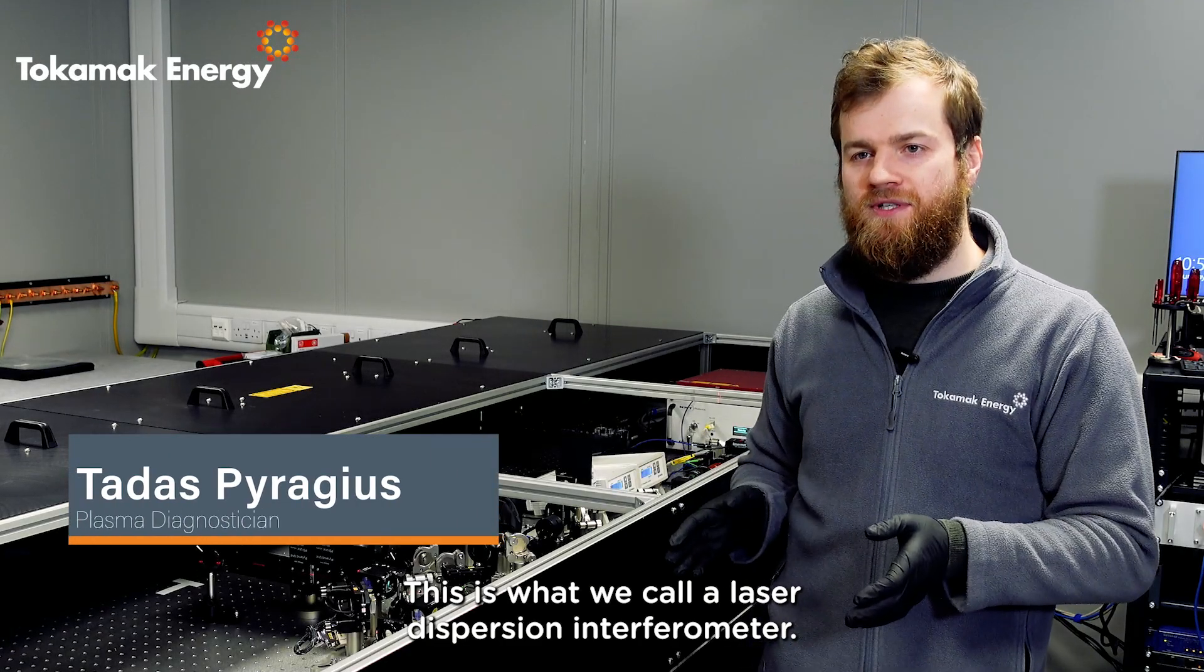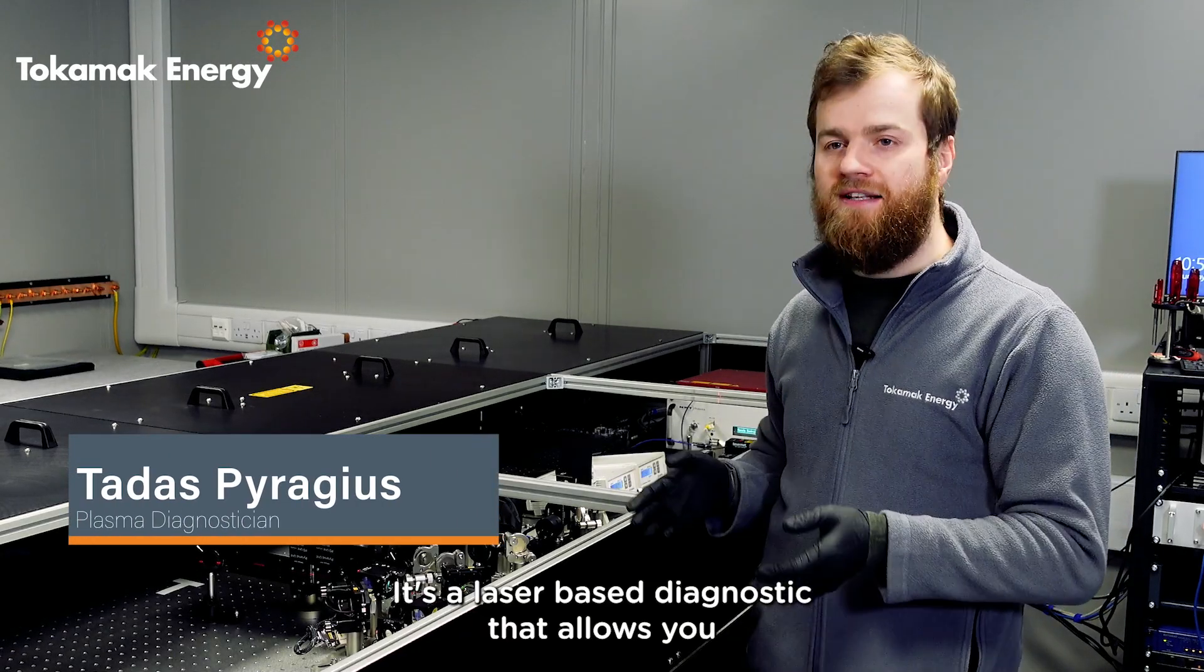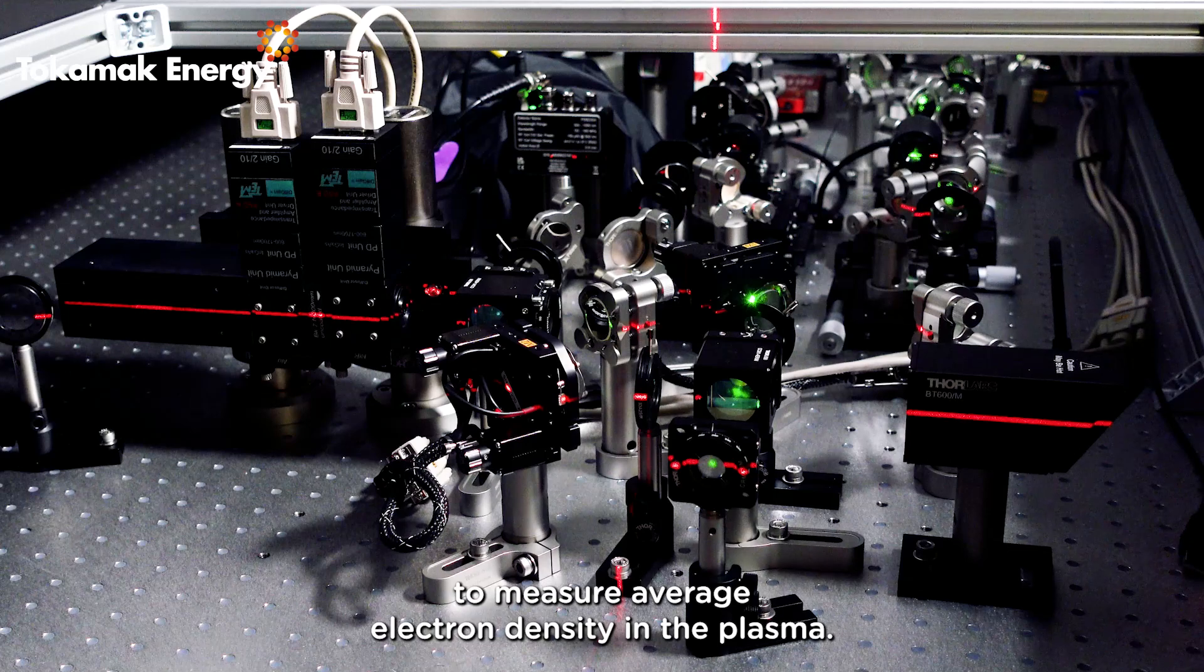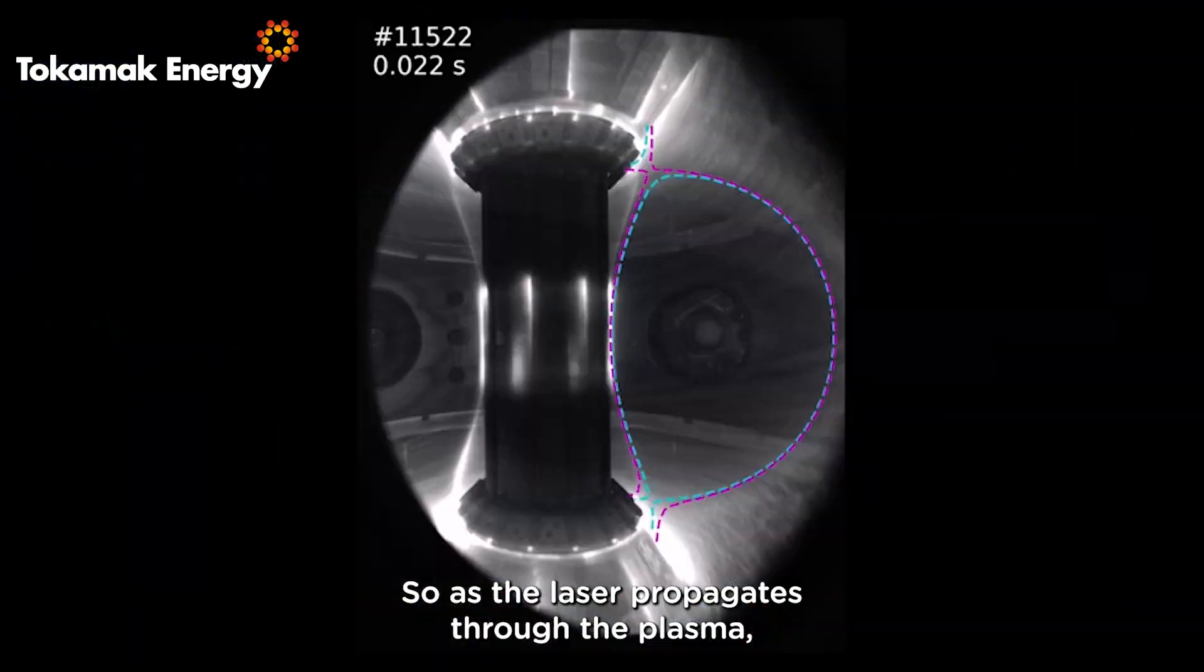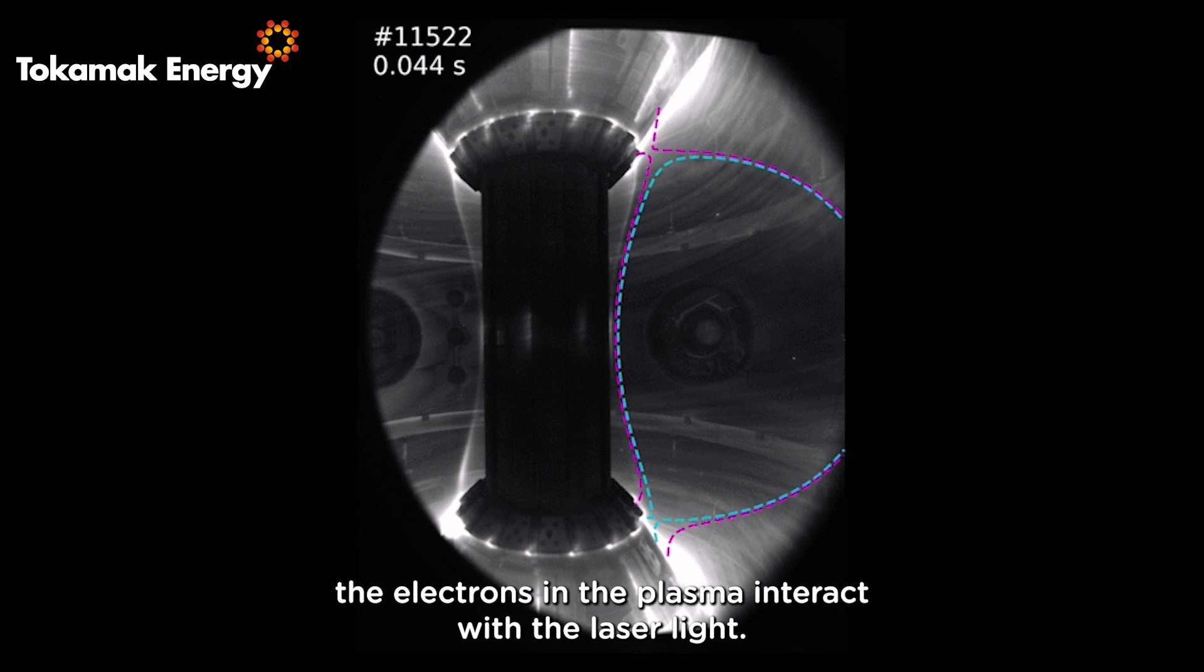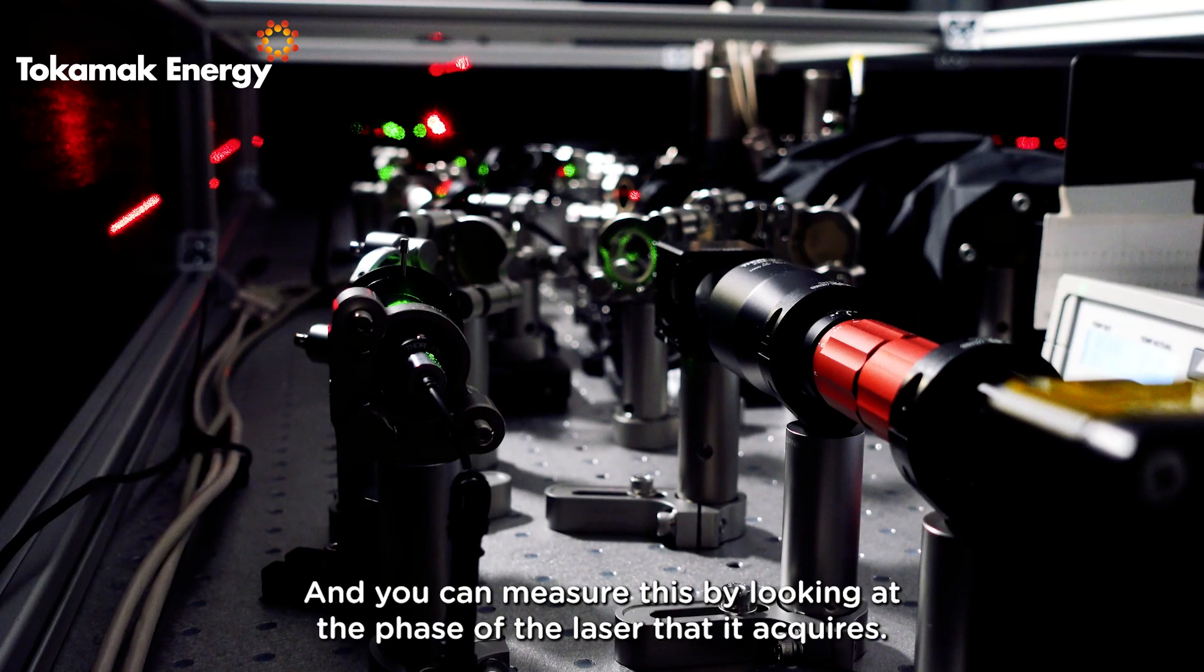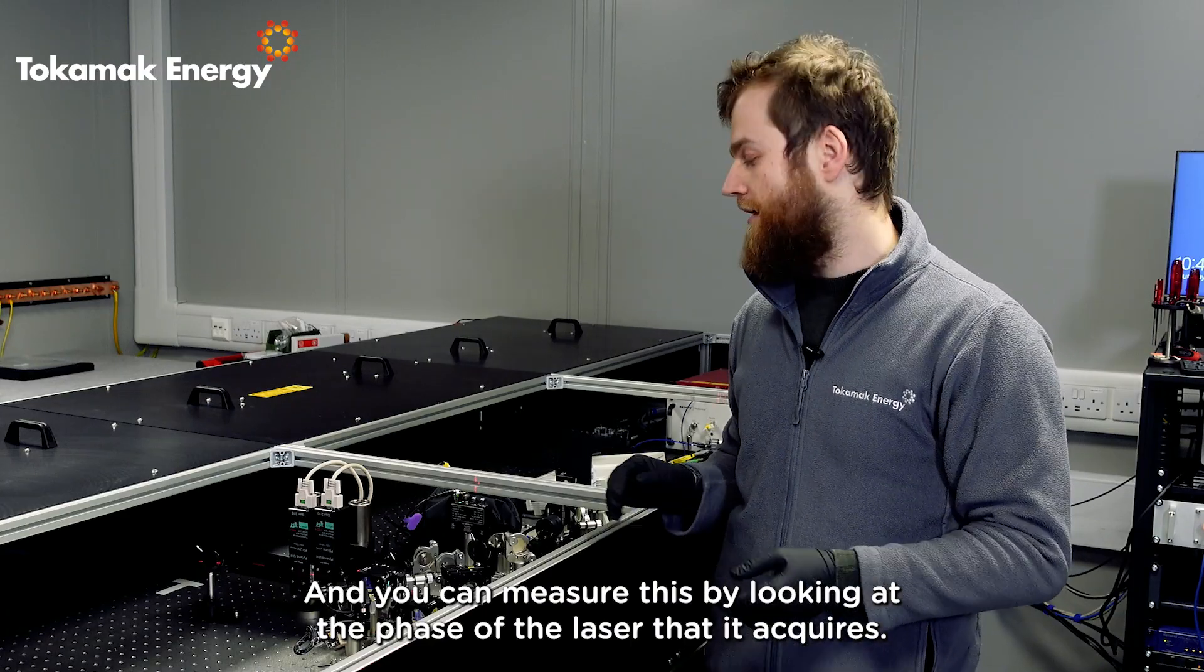This is what we call a laser dispersion interferometer. It's a laser-based diagnostic that allows you to measure average electron density in the plasma. As the laser propagates through the plasma, the electrons interact with the laser light. You can measure this by looking at the phase that the laser acquires.